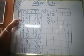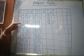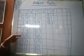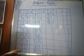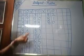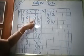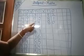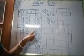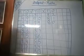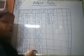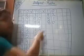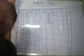Then you will count: 99, 98, 97, 96, 95, 94, 93, 92, 91, 90, 89, 88, 87, 86, 85, 84, 83, 82, 81, 80.